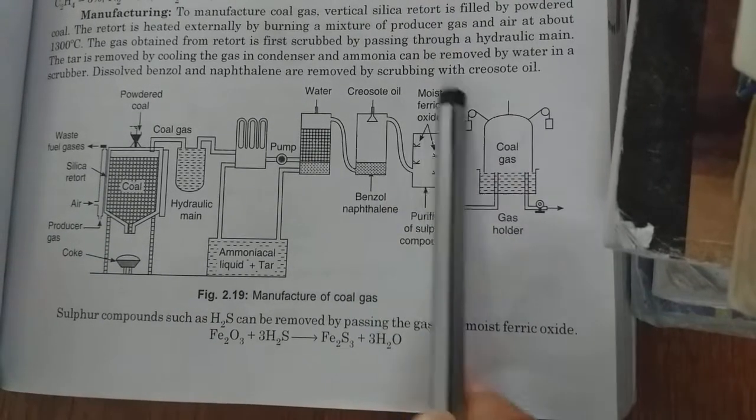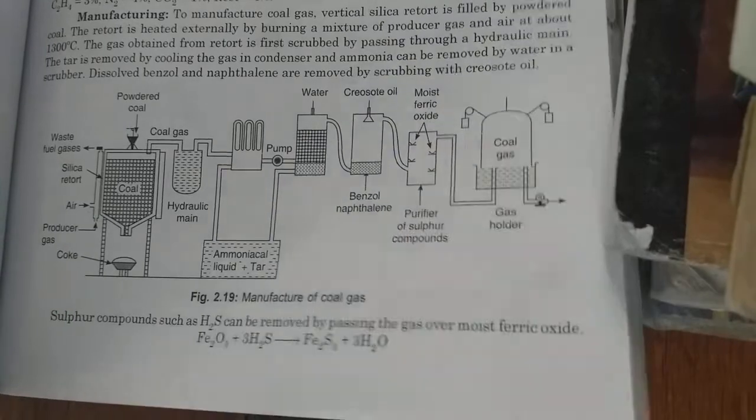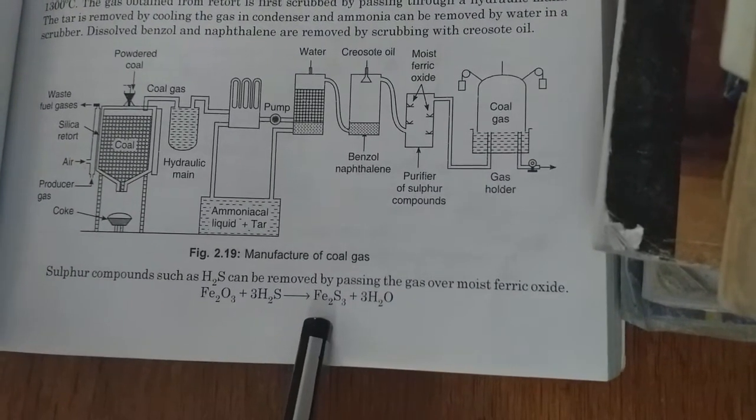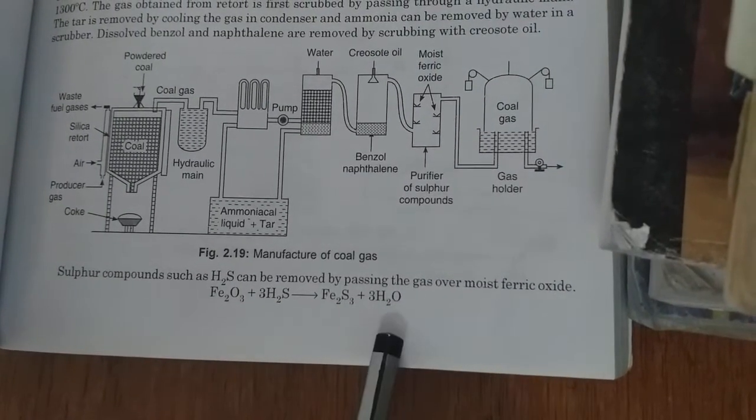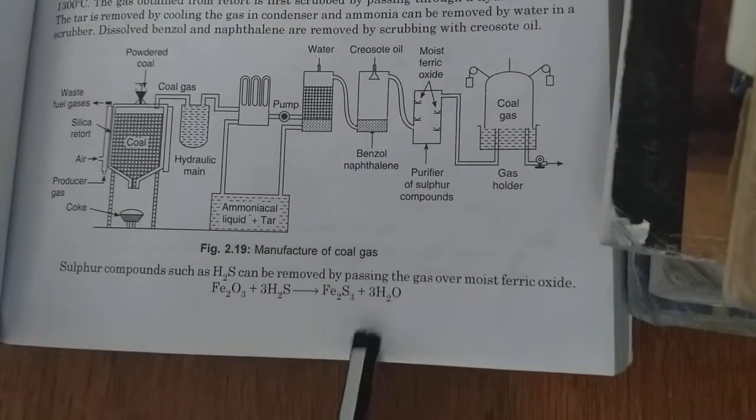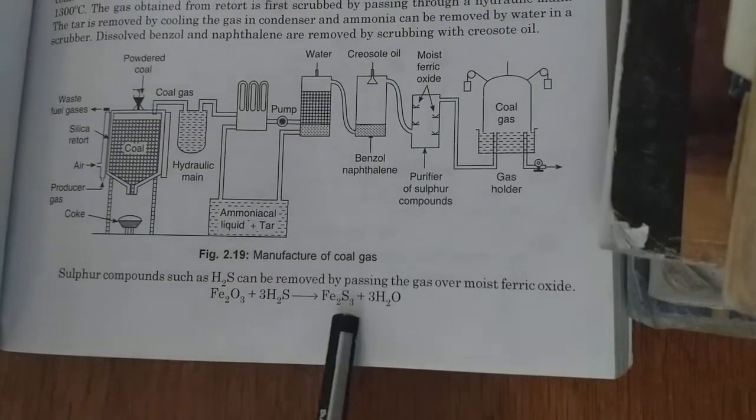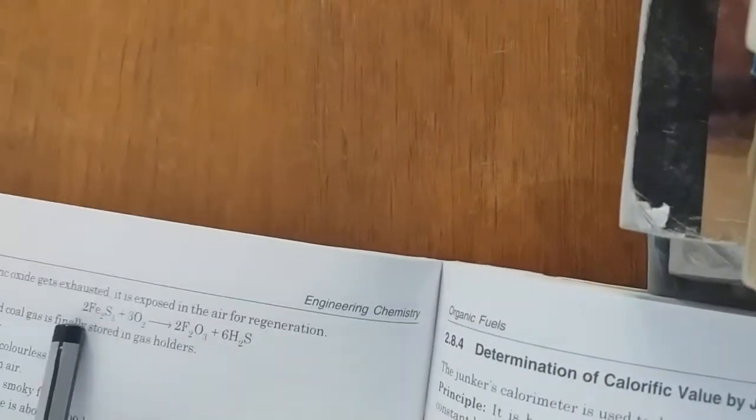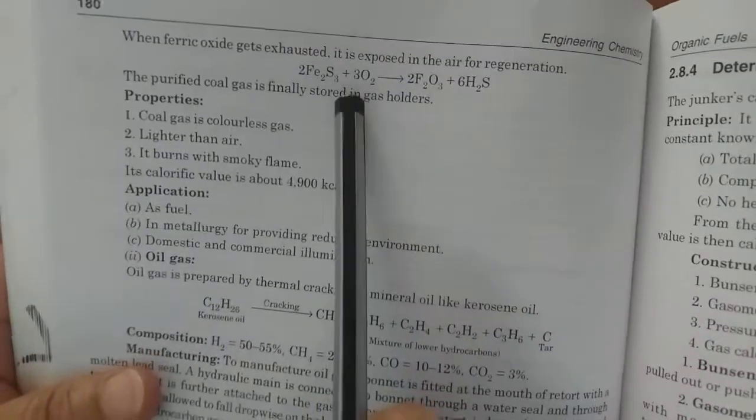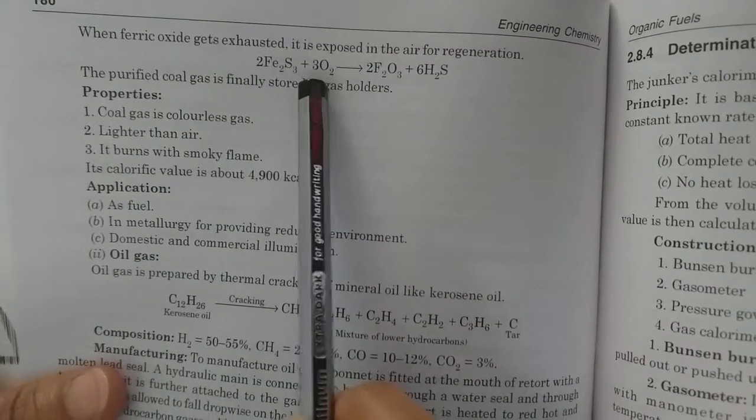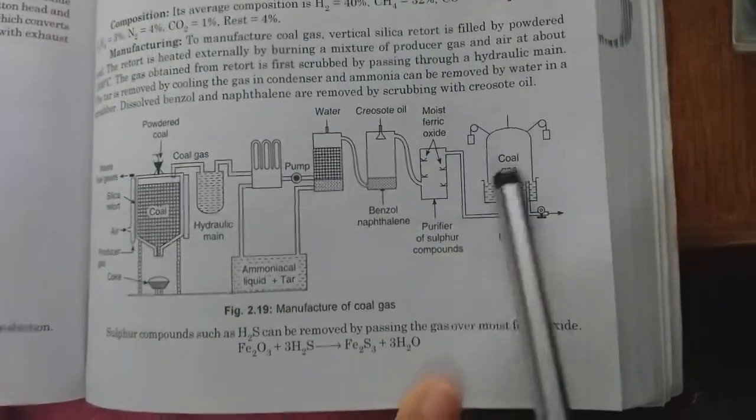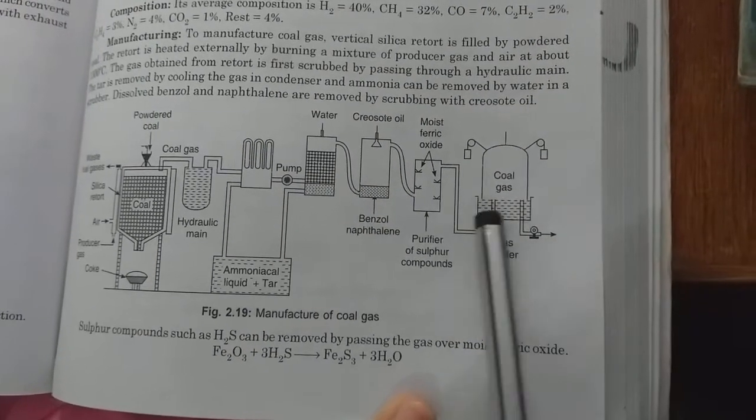After that it passes through a catalytic chamber where moist iron oxide is present. Because of this moist iron oxide, sulfur is removed. H2S which is present in the gas is removed in the form of sulfide. Fe2O3 is converted into Fe2S3. After working a few hours, this moist iron oxide is completely converted into Fe2S3 and this catalytic bed is exhausted. By regenerating this catalytic bed, the iron sulfide is exposed to air for regeneration. When iron sulfide is exposed to air, it is again converted into Fe2O3 and again used as catalyst.